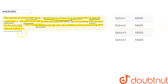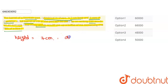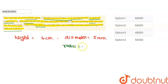Let's see. First, the initial case: we are given a cylinder whose height is 7 cm and diameter is 5 mm. Now, if the diameter is 5 mm, then the radius is half of that — 5 mm divided by 2 — which gives us 2.5 mm.